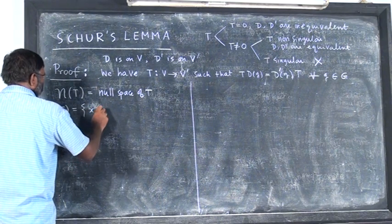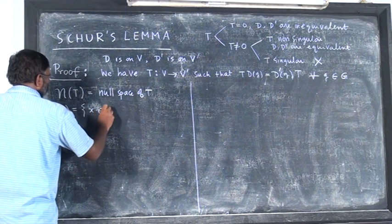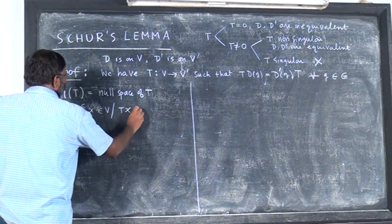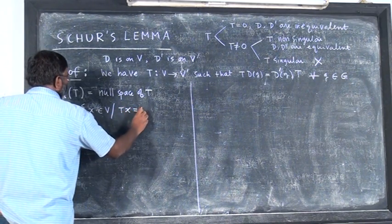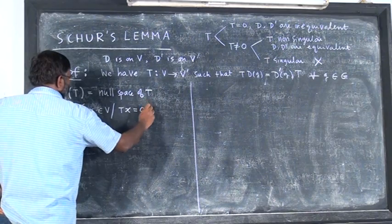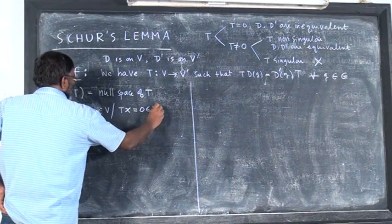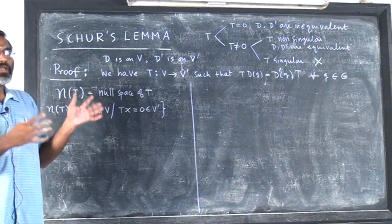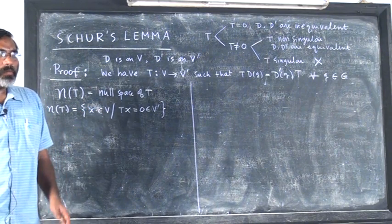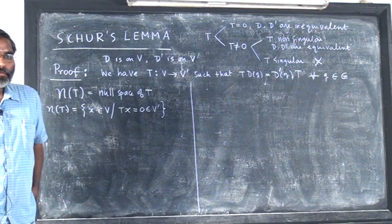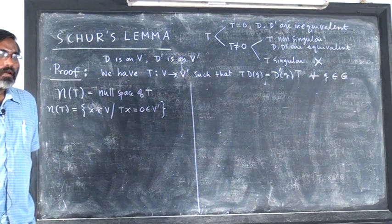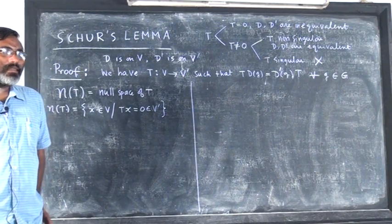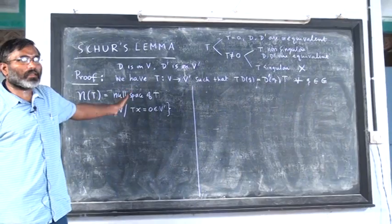Define the null space N(T) as the set of x in V such that T(x) equals 0 in V prime — all those elements in V which are mapped to the null vector. This is exactly the same definition of null space, but here it is a vector space.